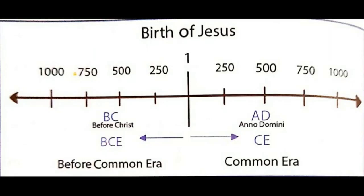You may have come across BC, BCE, and AD, CE written after dates in many texts. What do these mean and why are they used? BC, or Before Christ, refers to the time period before Jesus Christ was born. It is also known as BCE — Before Common Era.